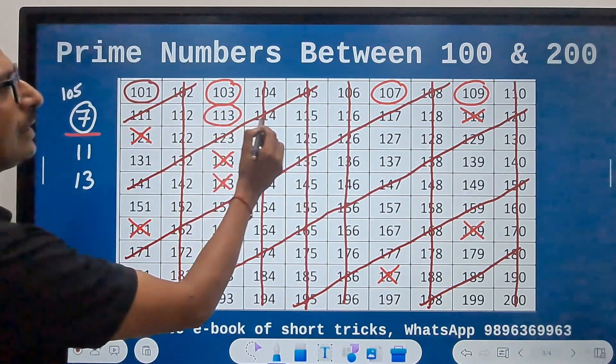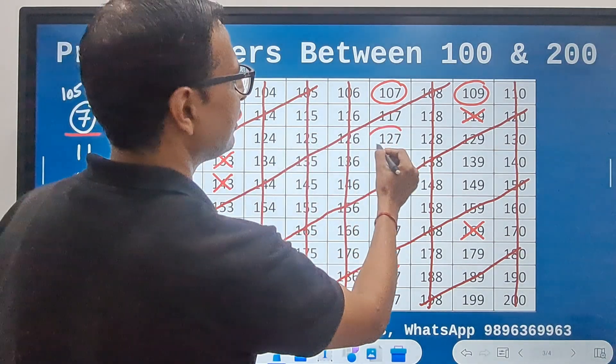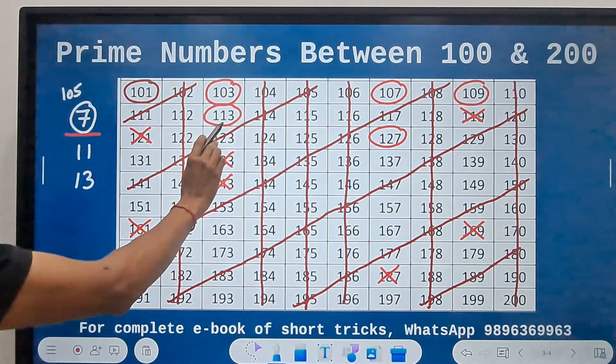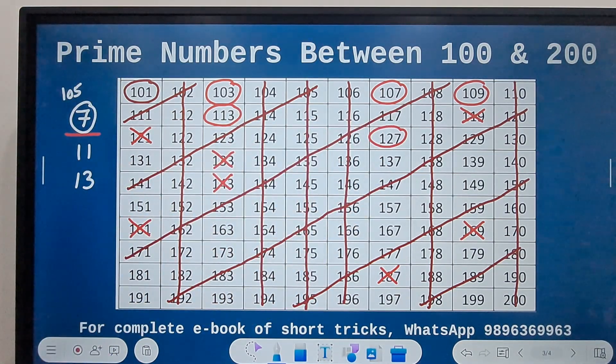113, and then we have 127. Look at the difference here. From 113 to 127, we have no prime numbers.